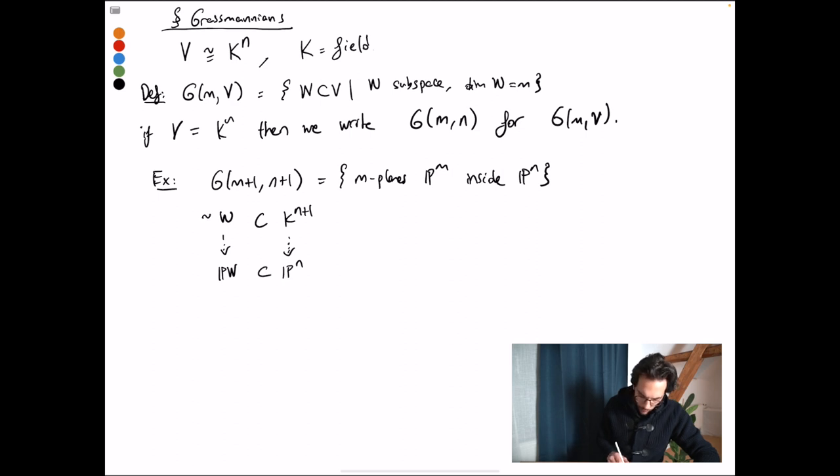Now w was isomorphic to k^m, therefore this P(w) is isomorphic to P^m. Sorry, w was k^(m+1).